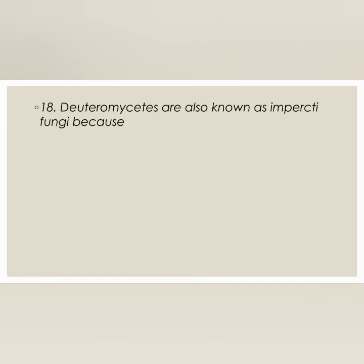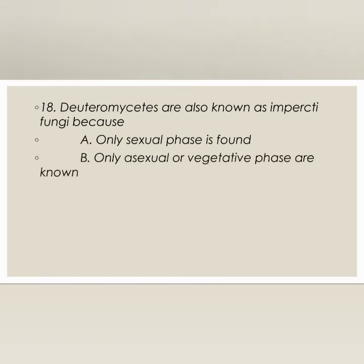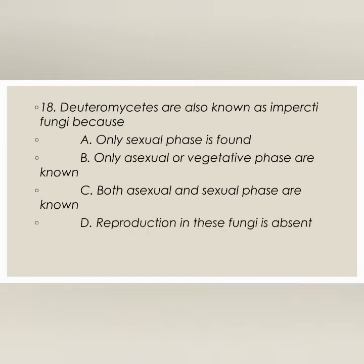Next question: Deuteromycetes are known as imperfect fungi because — only sexual phase is found, only asexual or vegetative phase is found, both asexual and sexual phase are known, or reproduction in this fungi is absent? The correct answer is option B: only asexual or vegetative phase is known.